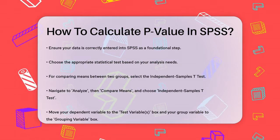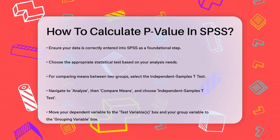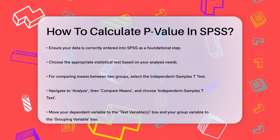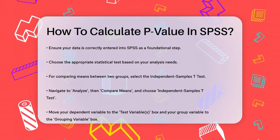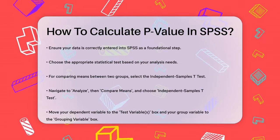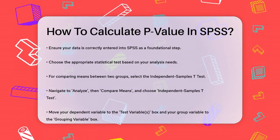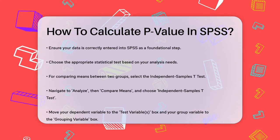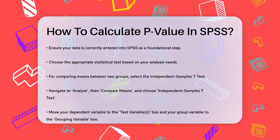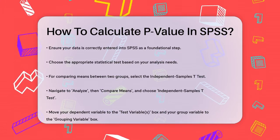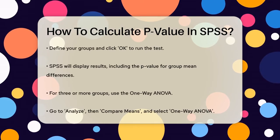Once your data is in, you'll need to choose the right statistical test based on what you're trying to analyze. If you're comparing means between two groups, you'll use the Independent Samples t-test. To do this, go to the Analyze menu, select Compare Means, and then choose Independent Samples t-test.